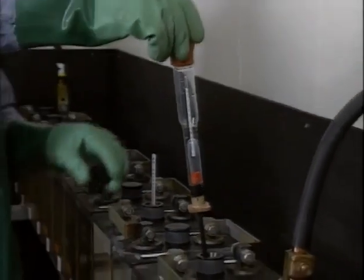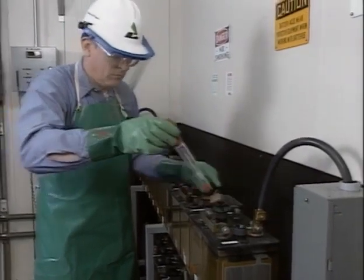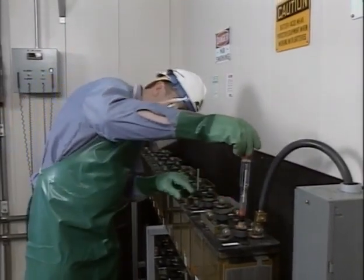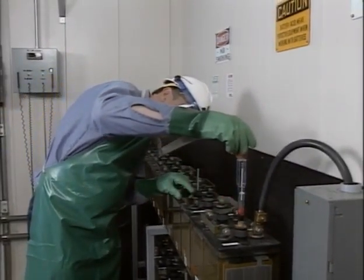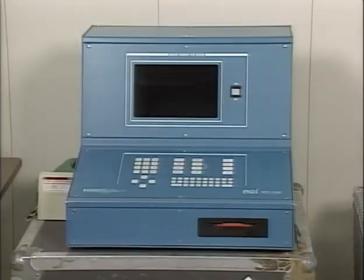Specific gravity tests, if done at the right time and when properly corrected for temperature, give a good indication of the state of charge of the cells in a battery. Now, while specific gravity and voltage tests indicate the state of charge of the cells in a battery, they don't tell you if the battery can deliver the necessary power when it's needed. Two tests that do are the integrity and capacity tests. These two tests will be covered in the next part of this program.